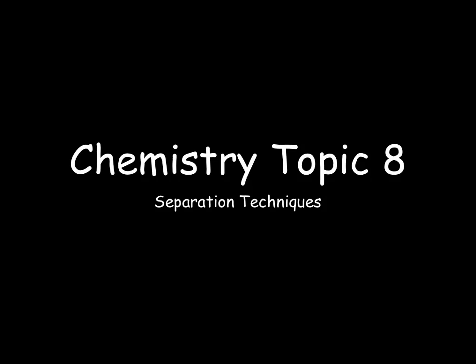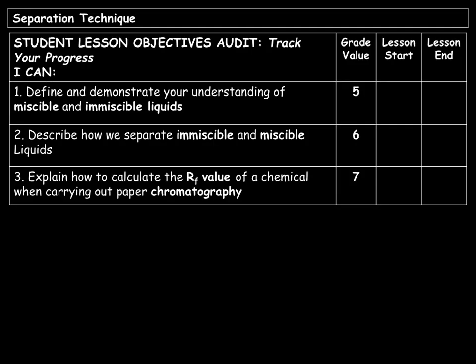This is a GCSE chemistry tutorial within topic 8. In this video we will be looking over separation techniques. We will look at defining and demonstrating an understanding of miscible and immiscible liquids, how we can separate immiscible and miscible liquids, and how to calculate the RF values of a chemical when carrying out paper chromatography.